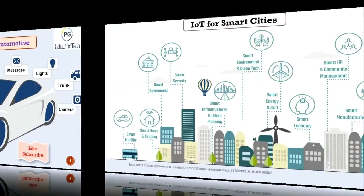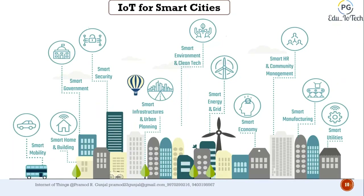IoT for smart cities: a smart city is another powerful application of IoT. Smart surveillance, automated transportation, smarter energy management systems, water distribution, urban security, and environmental monitoring — all are examples of IoT applications for smart cities. By installing sensors and using web applications, citizens can find free available parking slots across the city.